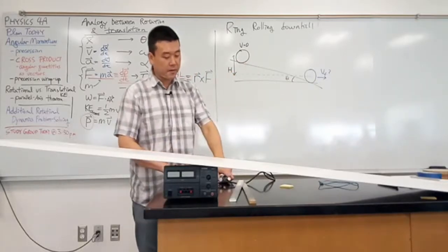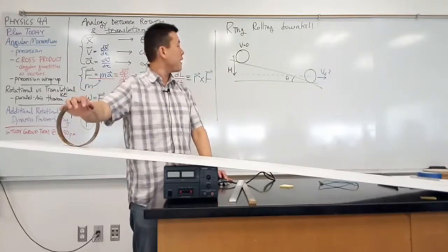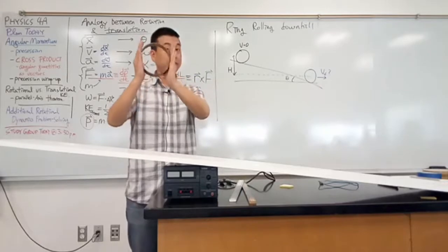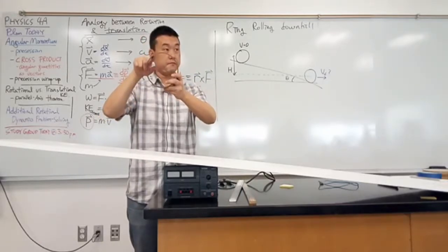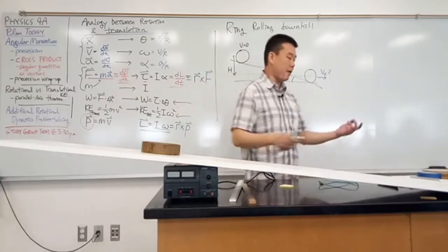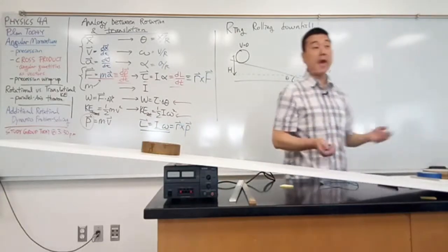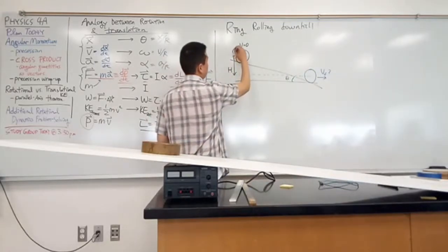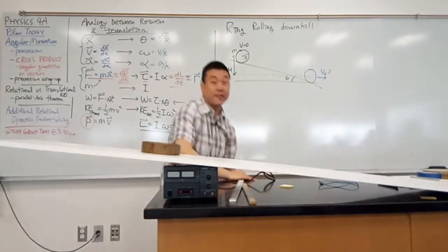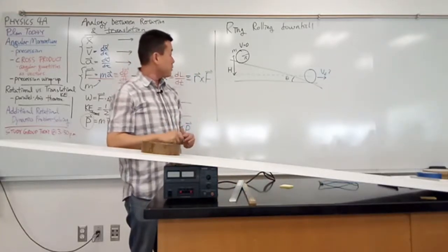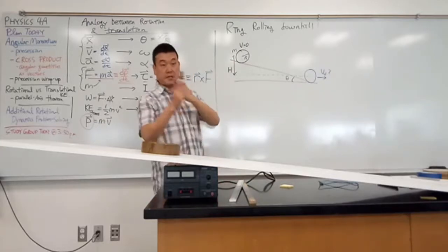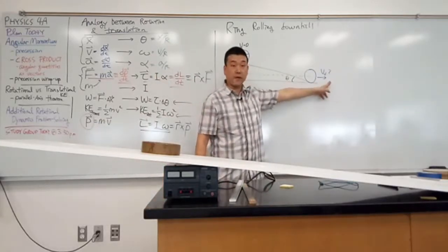Does this sound like a complete specification of the problem? Is there anything missing before I can figure out this velocity? Do I need to know the mass of the ring? Do I need to know the radius of the ring? My contention is that I don't need either of them — they are going to cancel out. So this is more or less a complete question; just give me the number for h and you can calculate the final velocity.